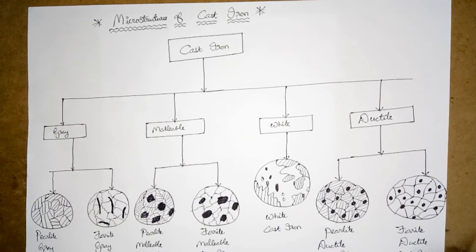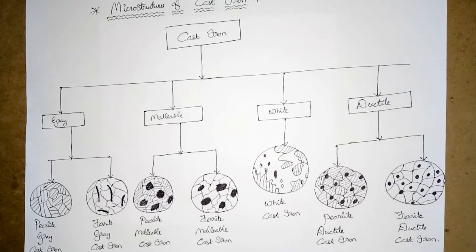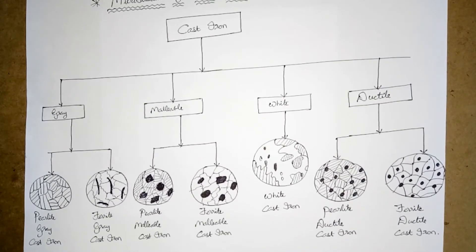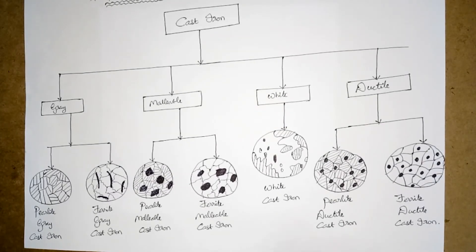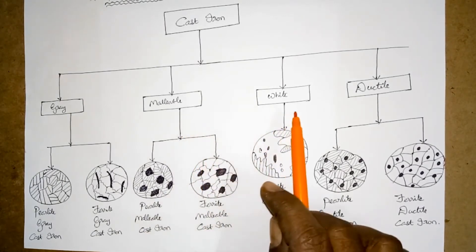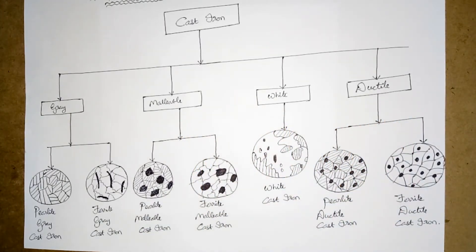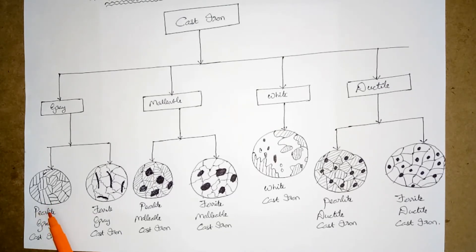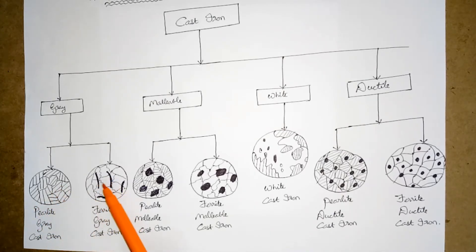Now let us start learning the microstructure of cast iron. There are four types of cast iron: grey cast iron, malleable cast iron, white cast iron, and ductile cast iron. First, if you notice grey cast iron, we can see its microstructure. These are the graphite particles which we can observe in the microstructure of grey cast iron.